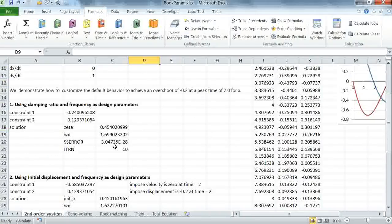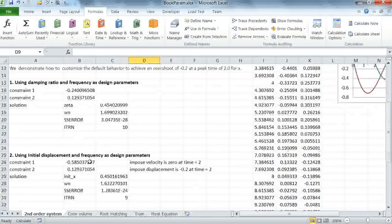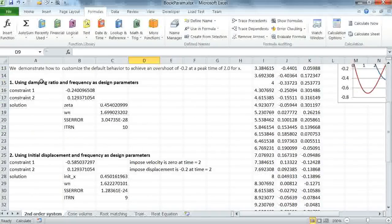Let's try another example. We can verify this towards the end. The next example is, instead of using omega and zeta, I'm going to use the initial displacement, which is the initial condition for the problem, and frequency as design variables. And I'm also going to change my constraints. My objective is still the same, but I'm going to show that there are multiple ways you can constrain the solution.